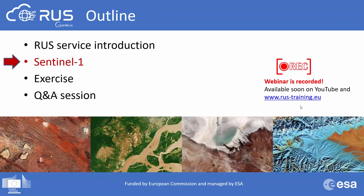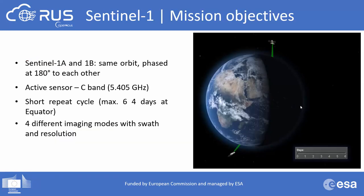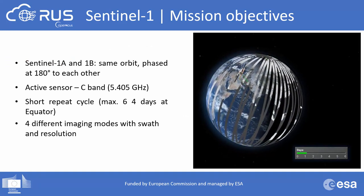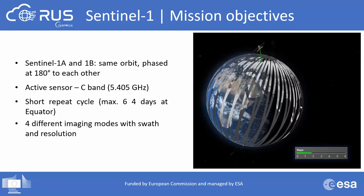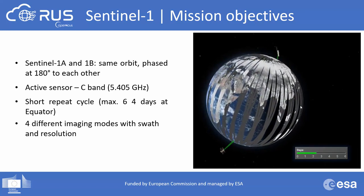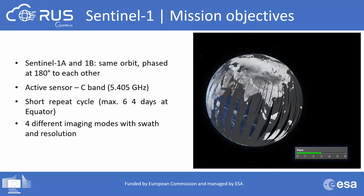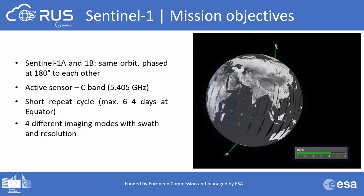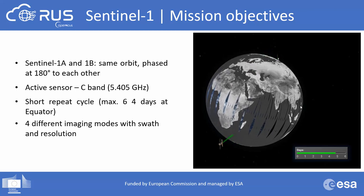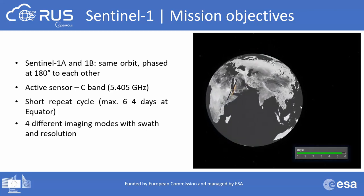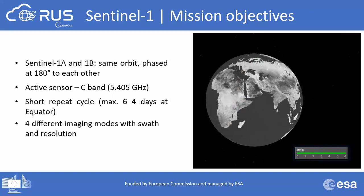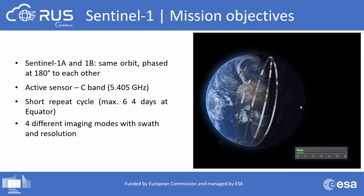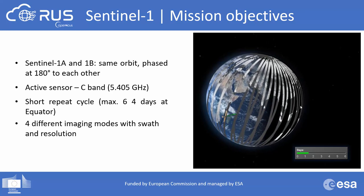For this exercise we will use C-band SAR data provided by the Sentinel-1 satellite. The Sentinel satellites are included in the space component of the Copernicus program. The Sentinel-1 mission consists of a constellation of two twin satellites — Sentinel-1A and 1B — placed at 180 degrees to each other, mainly to improve temporal resolution. It is an active sensor operating on the C-band, providing data with a short revisit cycle and different imaging modes.